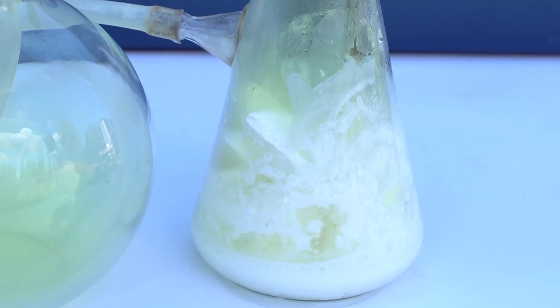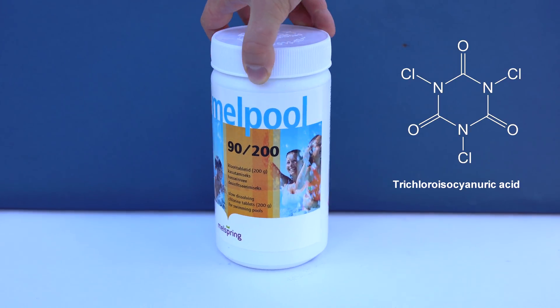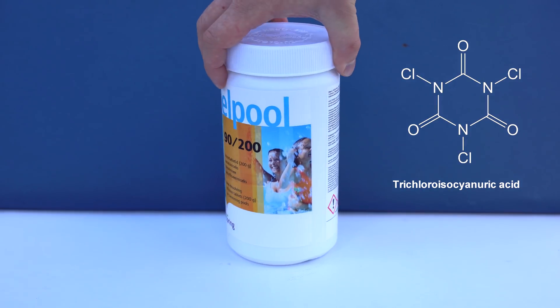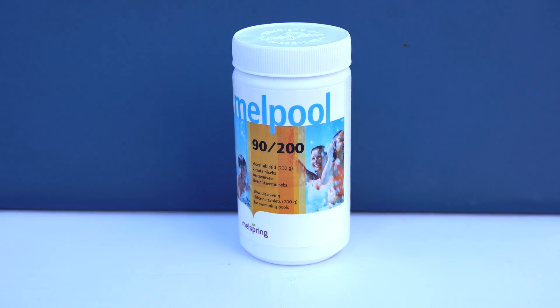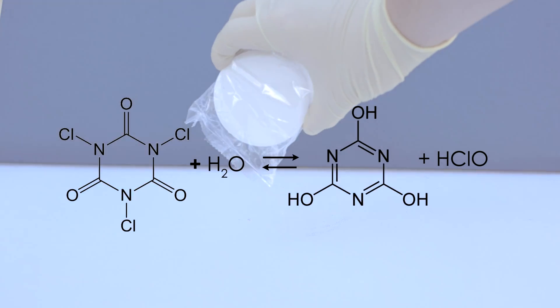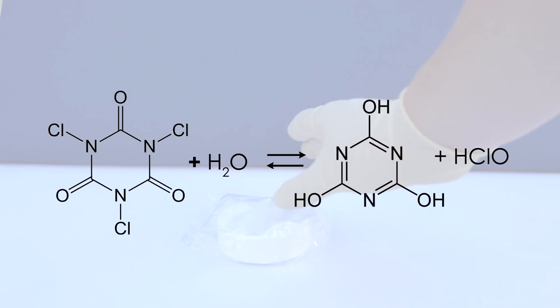For my experiments, however, I choose a different approach, a more efficient method of producing chlorine. As the main reagent, I am going to use trichlorocyanuric acid, which is also used as a disinfectant in swimming pools. When the tablet of this substance is thrown into a swimming pool, it gradually dissolves, slowly decomposing into chlorine and cyanuric acid.